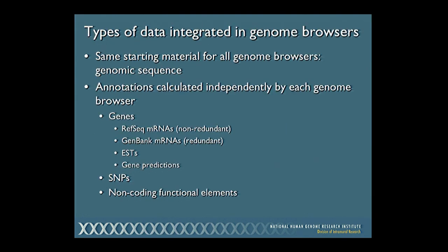Before we launch into the details of the genome browsers, let's take a quick look at what sort of material you expect to find there. Both Santa Cruz and Ensembl start with the same basic material — your genomic sequence — and then each browser independently calculates a set of annotations. Those annotations include genes, sequence variations, SNPs, as well as non-coding functional elements, and many other things I'll show you in the course of the lecture.